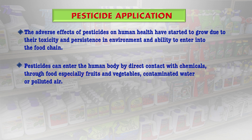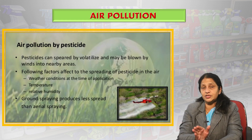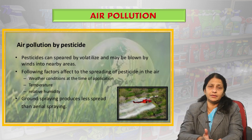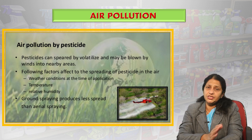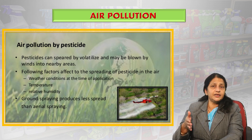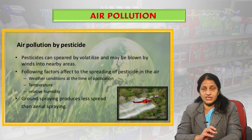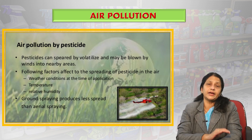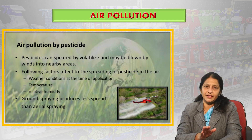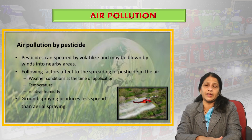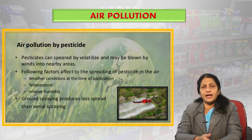Pesticides can enter the human body by direct contact with chemicals, through food — especially contaminated fruits and vegetables — water, or polluted air. The presence of pesticides in air can be caused by spray drift, volatilization of gaseous and liquid forms of pesticides from treated surfaces, and aerial application of pesticides. The extent of drift depends on droplet size and wind speed. The rate of volatilization depends on the surface on which the pesticide settles, ambient temperature, humidity, wind speed and the vapor pressure of the ingredients.